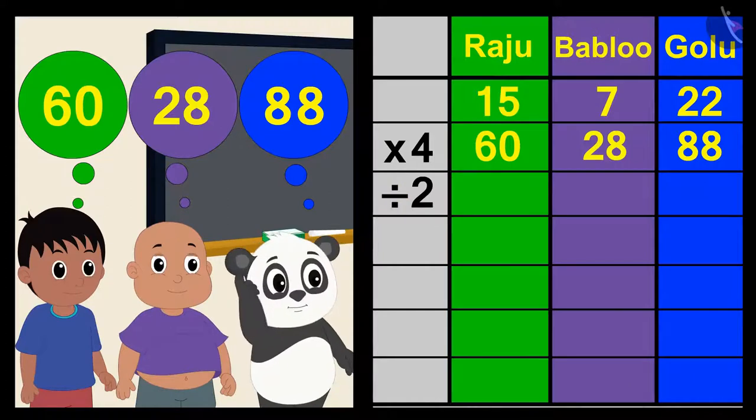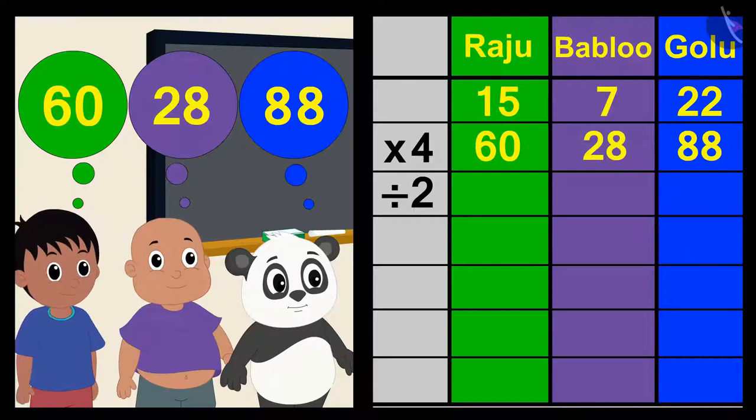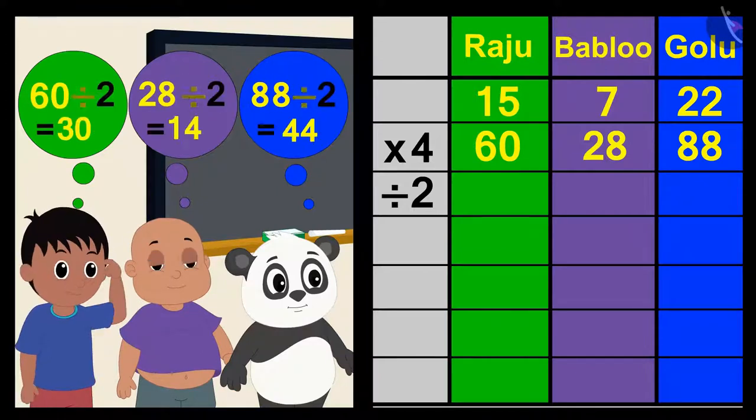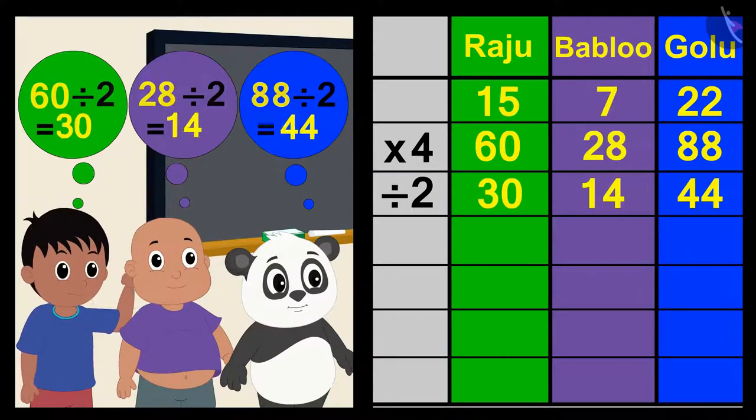Now divide your answer by two, Shere Khan explains the process and the three friends quickly do it.